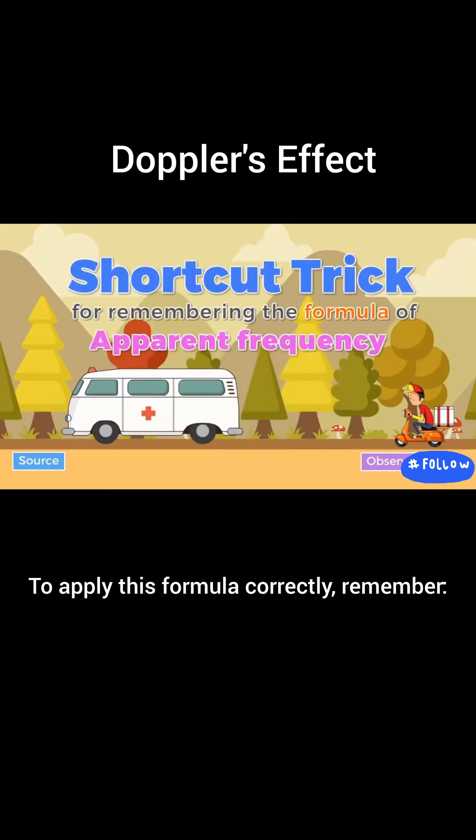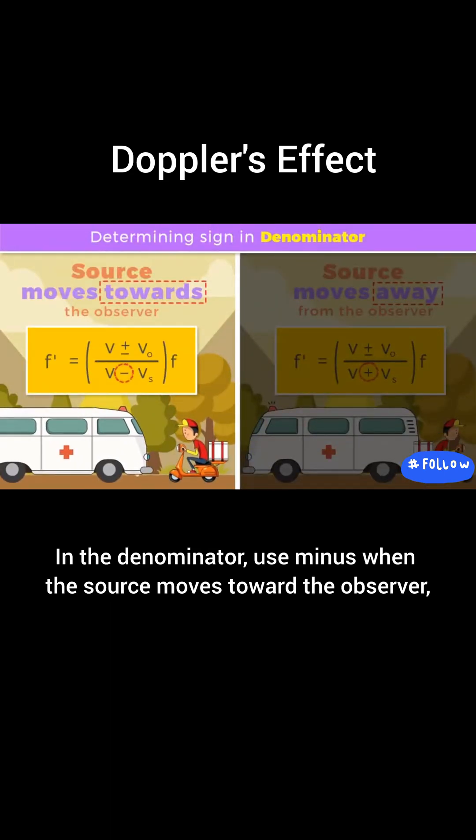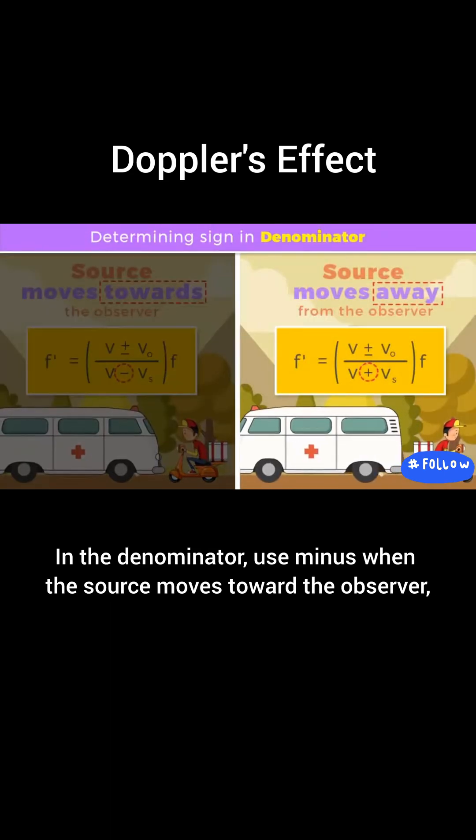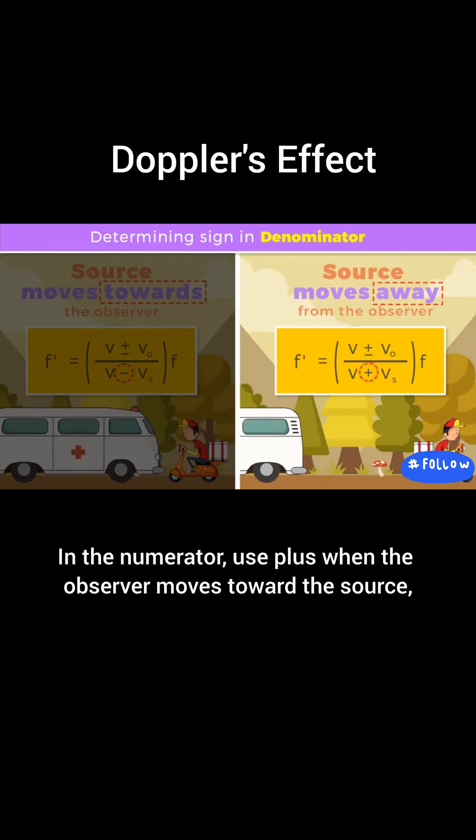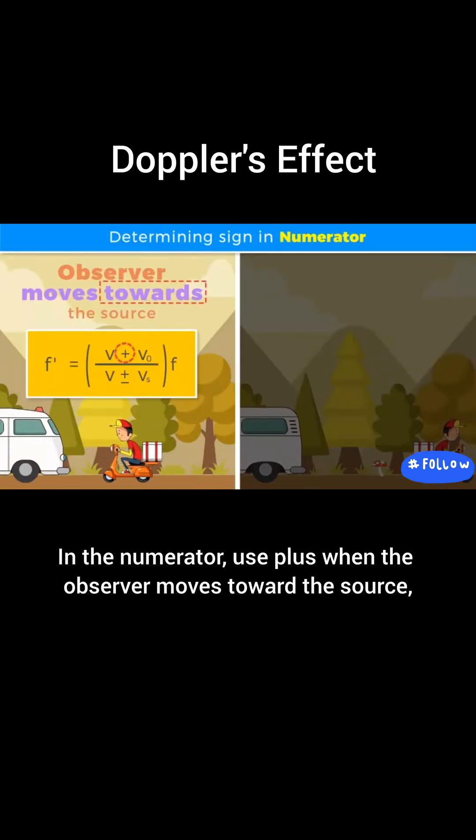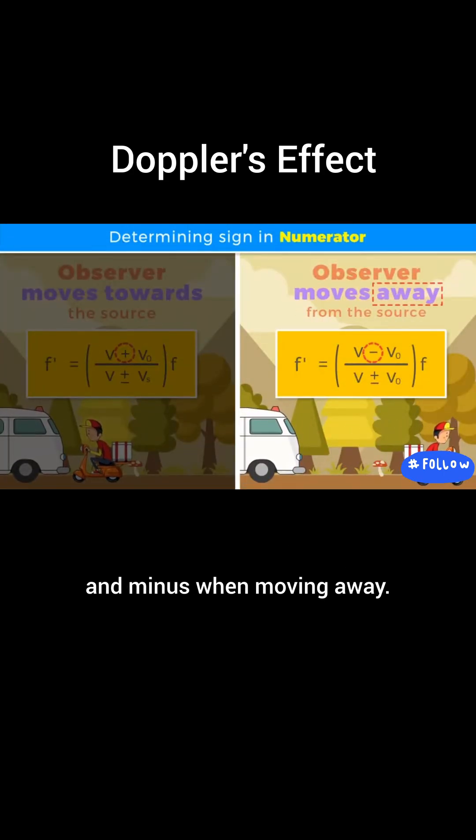To apply this formula correctly, remember: in the denominator, use minus when the source moves toward the observer, and plus when it moves away. In the numerator, use plus when the observer moves toward the source, and minus when moving away.